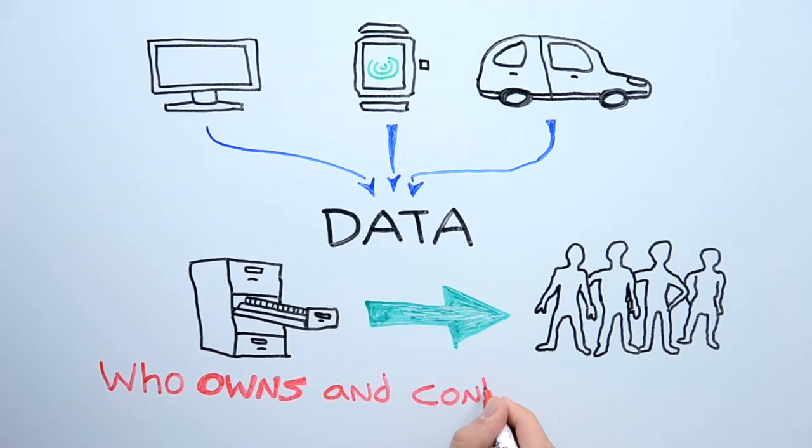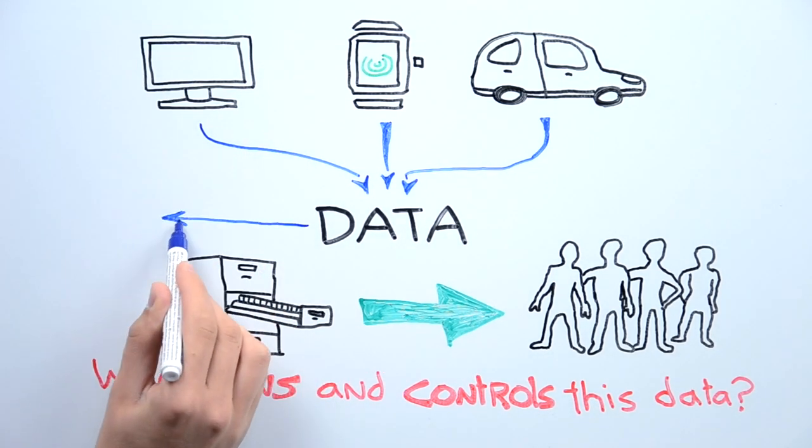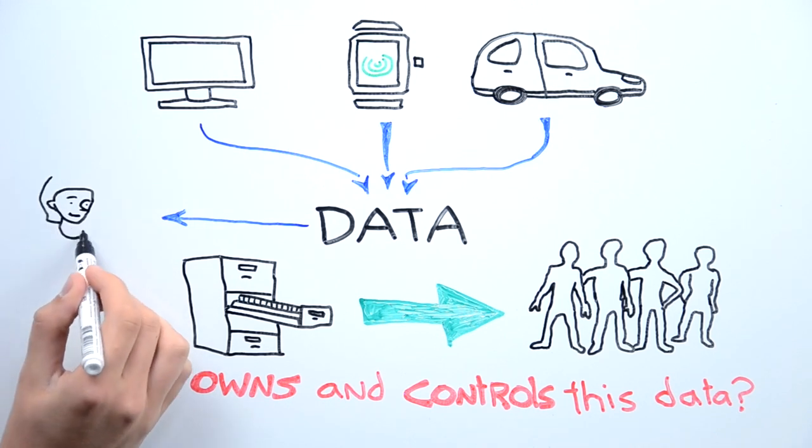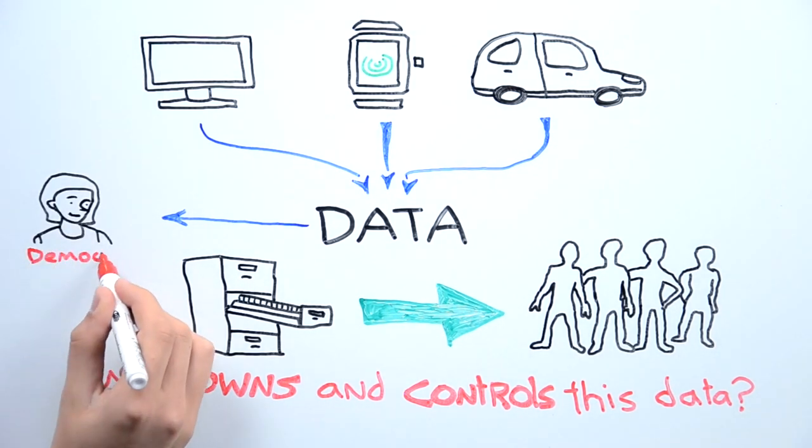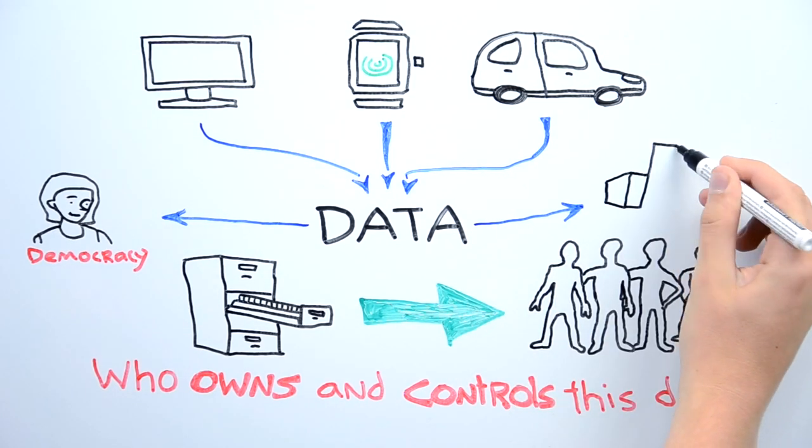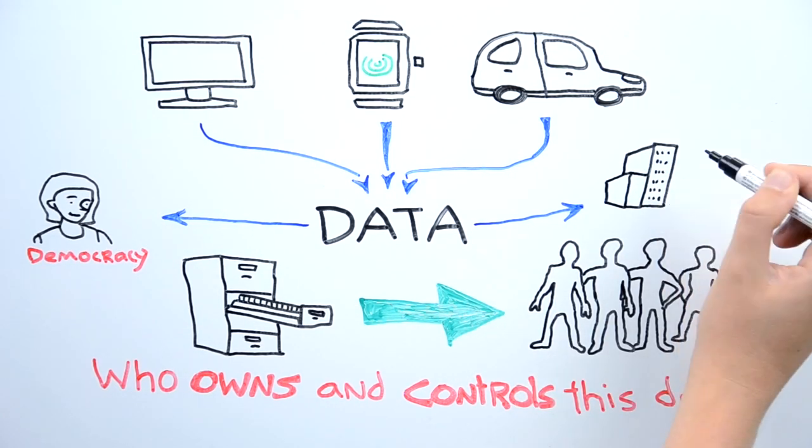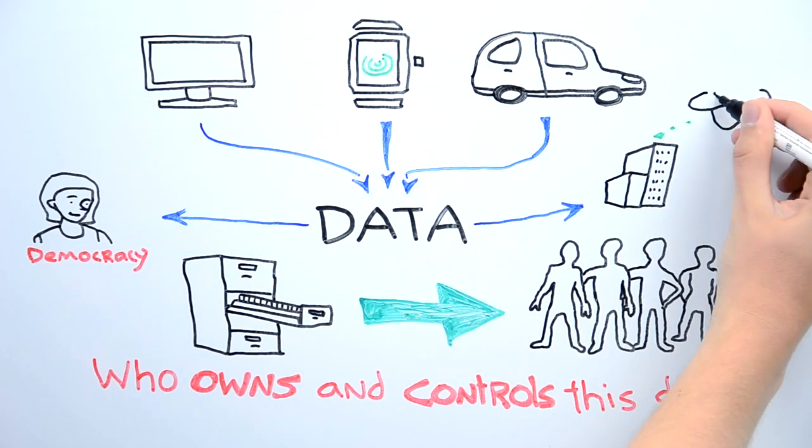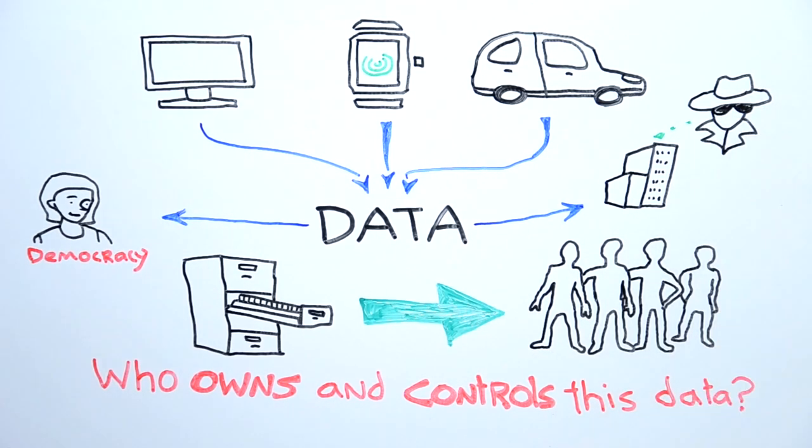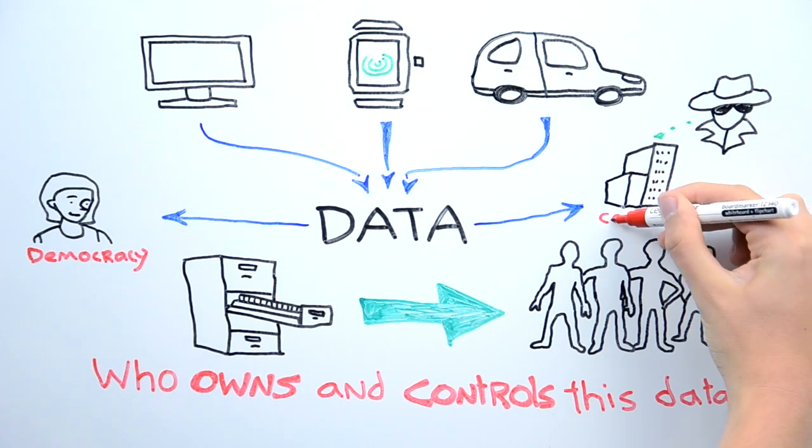Who owns and controls this data? That's the important question here. If this personal information about you is owned and controlled by you, then we have a democracy. But if this personal information and data about you is controlled by corporations and by extension shared with government agencies, then we have a very different type of society. We have a very different system. We have a corporatocracy.